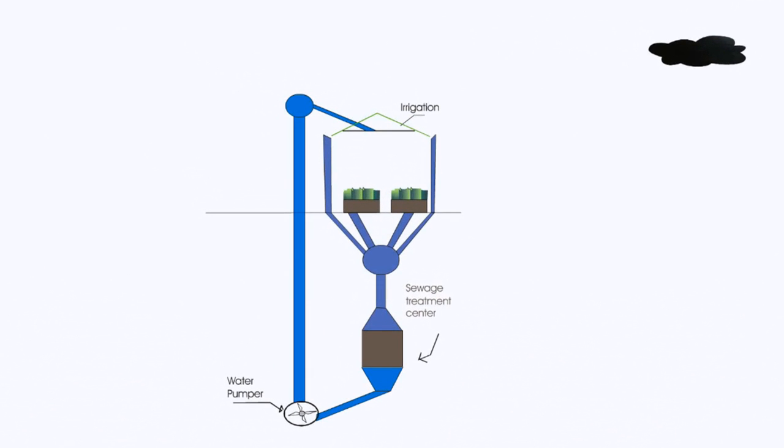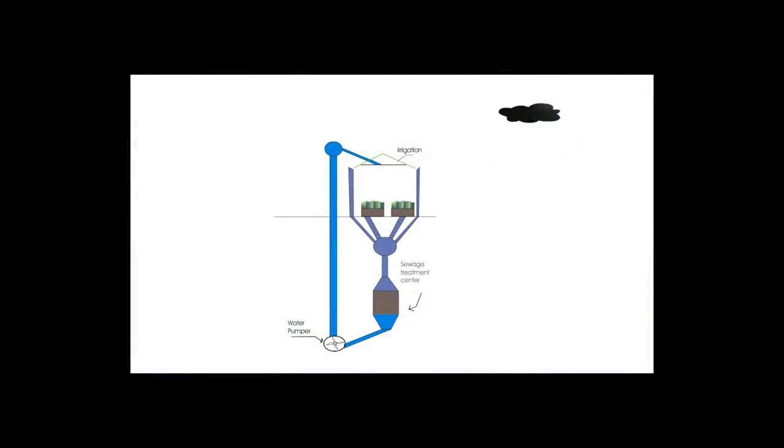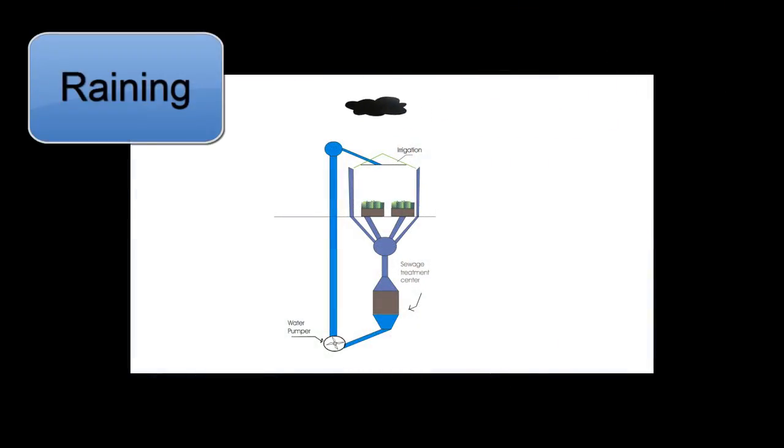The design of this greenhouse sewage treatment system is focused on saving electric energy. This system only uses one pump to pump the treated water back to the greenhouse. The first step of the process is when it is raining.